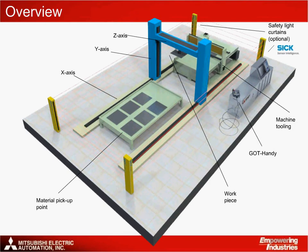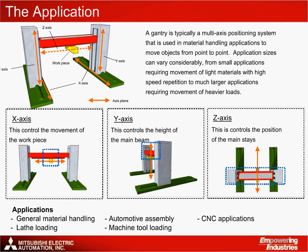The gantry then moves back to the flat surface to pick up another material and transfers it to the three-axis machining table, continuing the process. A gantry is typically a multi-axis positioning system that is used in material handling applications to move objects from point to point. Application sizes can vary considerably, from small applications requiring movement of light materials with high-speed repetition, to much larger applications requiring movement of heavier loads.